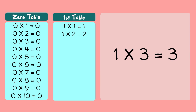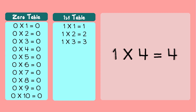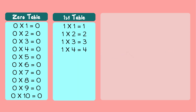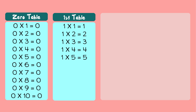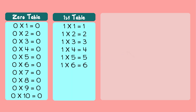One three's a three. One four's a four. One five's a five. One six's a six. One seven's a seven.